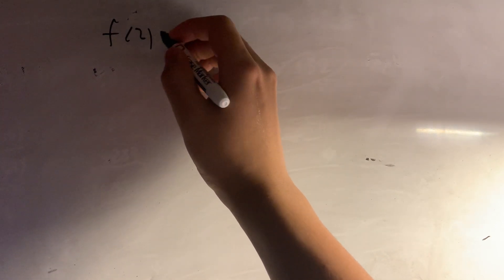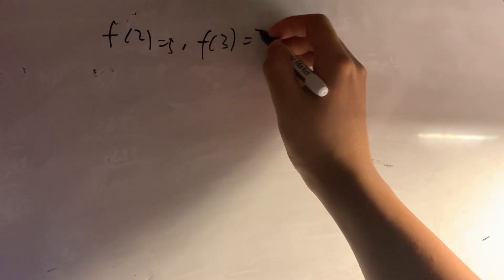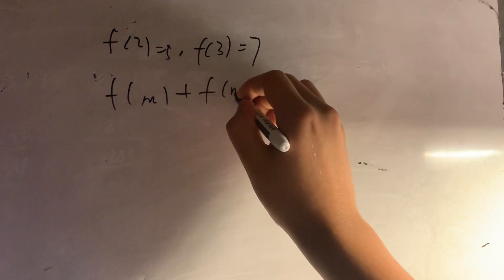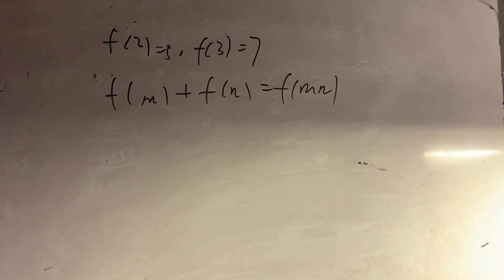A function with f(2) equal to 5, f(3) equal to 7, and f(m) plus f(n) equal to f(mn). We are required to find f(12).